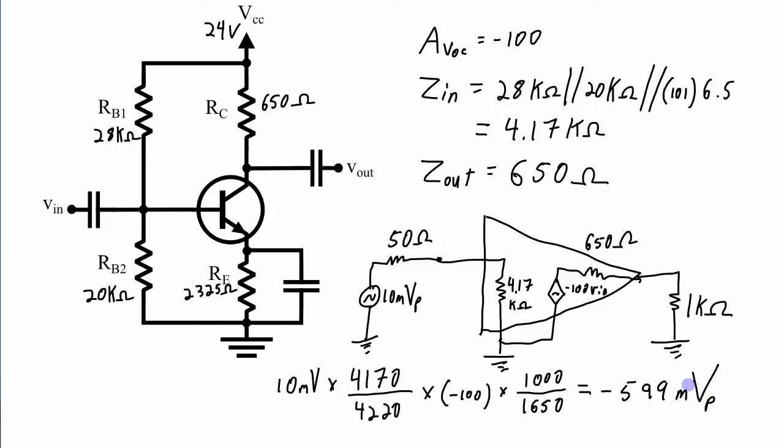So I apply this 10 millivolt peak signal in and I get a negative 599 millivolt peak signal out. And what this represents, this is a 10 millivolt sine wave, this is a 599 millivolt sine wave that is 180 degrees out of phase with the input as you would expect with a common emitter amplifier.